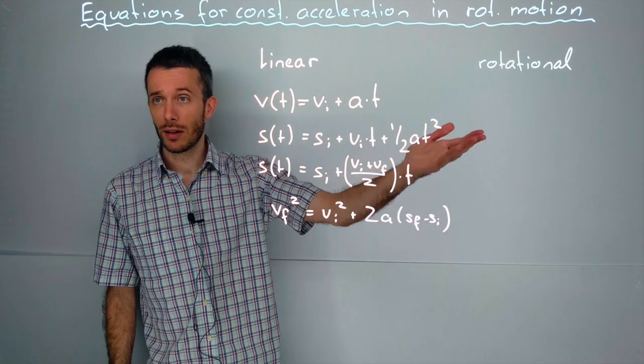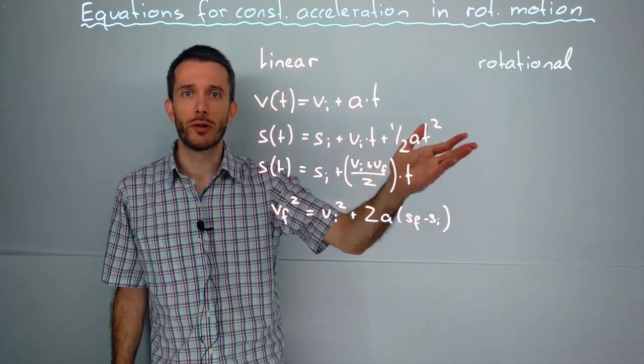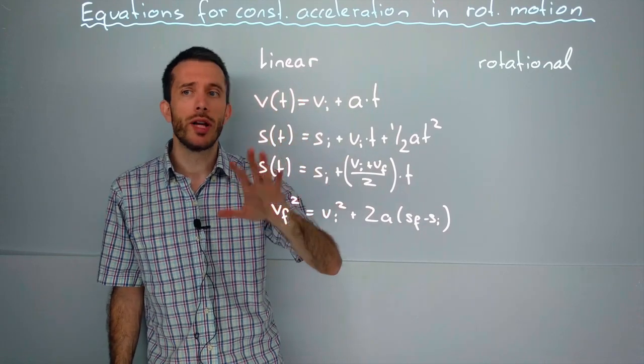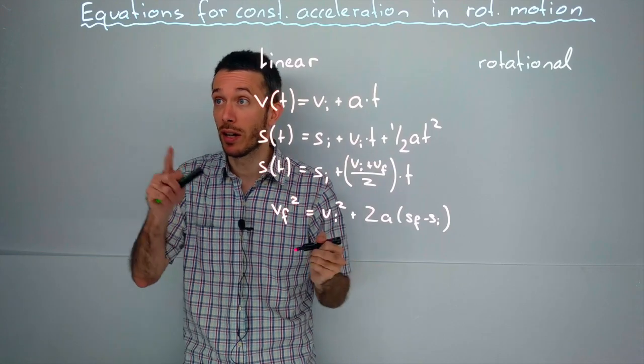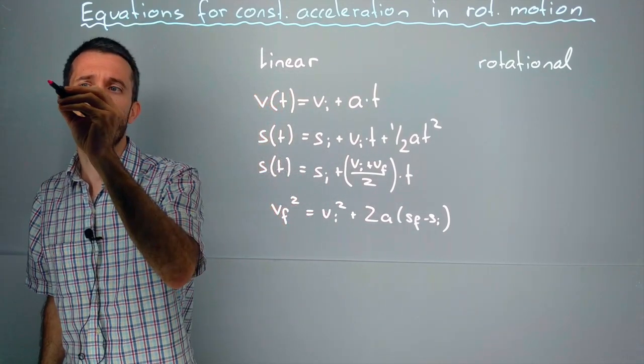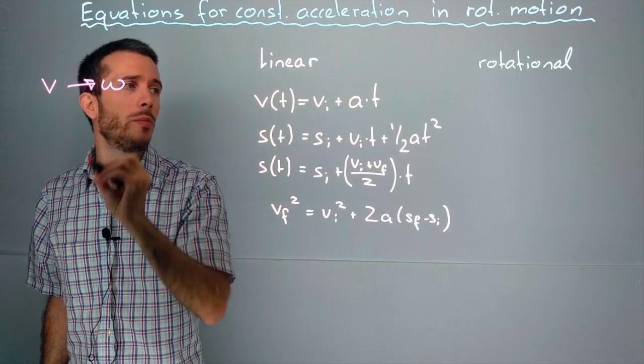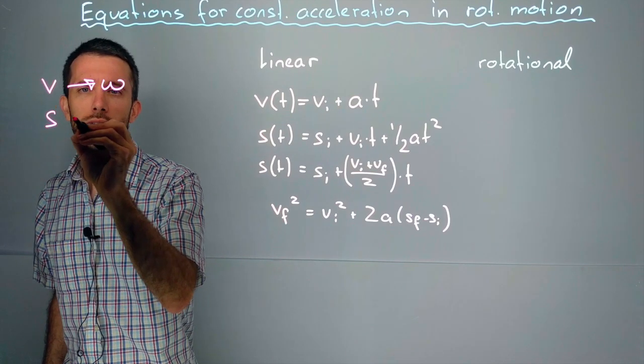Now, let's look at the rotational case. The good news is not only do these equations exist for the rotational case, they're actually very, very similar, so you don't have to remember anything new. All that you have to remember at the end of the day is that whenever you see a v in the linear case, you're going to replace this by the omega in the rotational case. Whenever you see an s in the linear case,